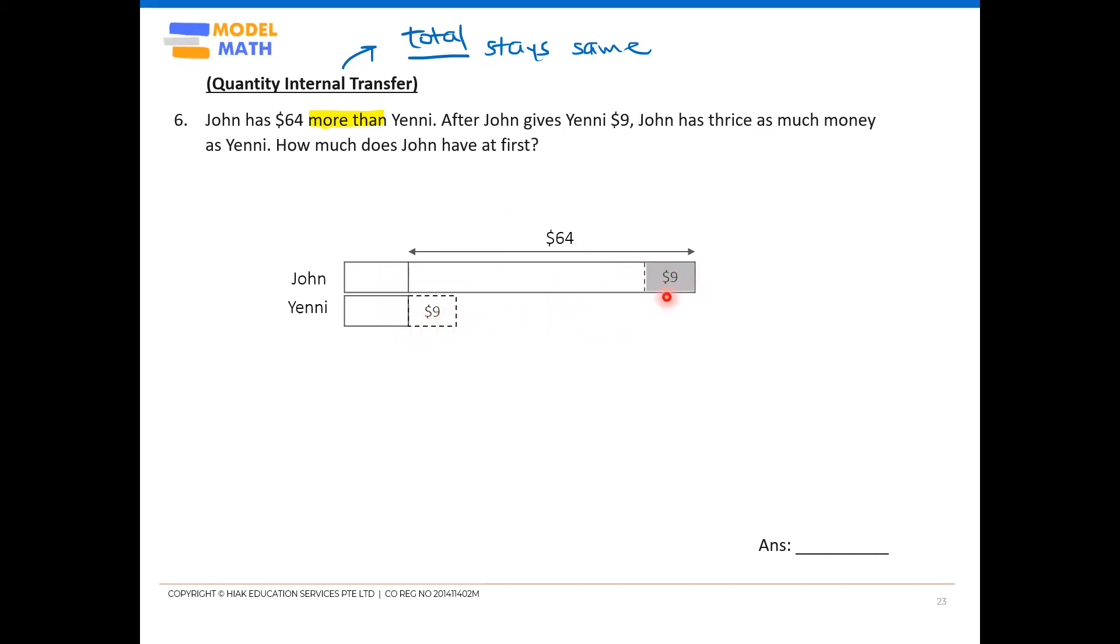So make sure the sizes are the same. When you shade away, whatever you shade and whatever you extend, try to make them as equal size as possible. So finally, now in the end, John has twice. That means in the end, John has three units.